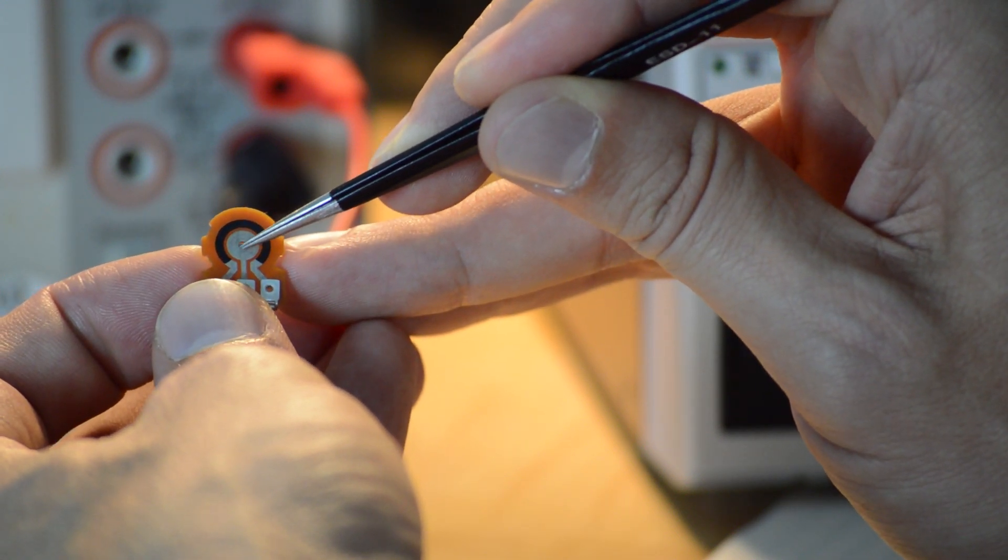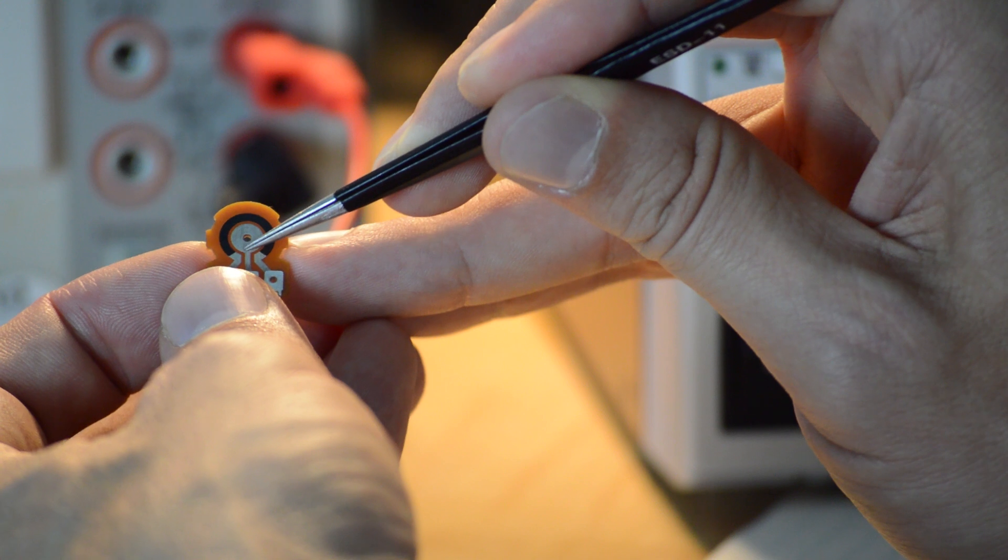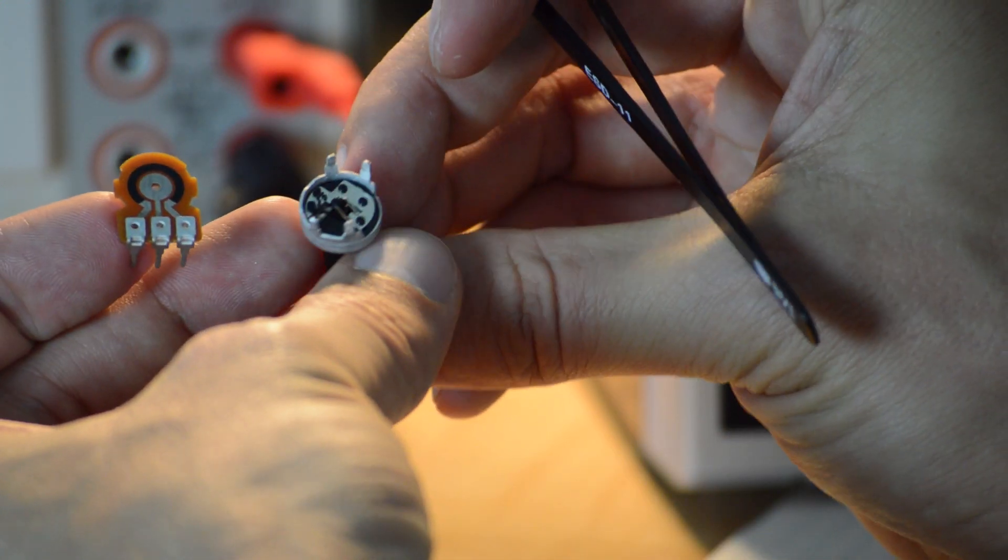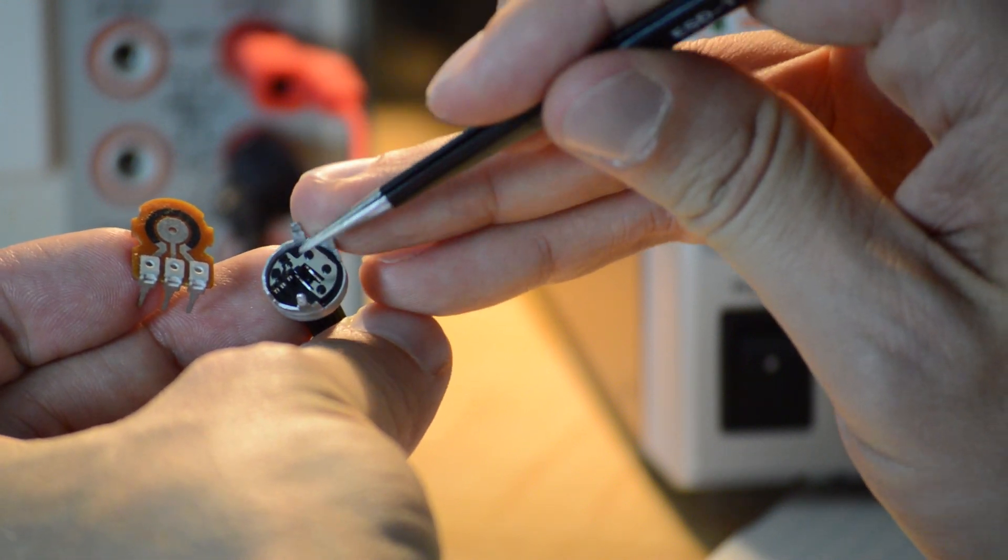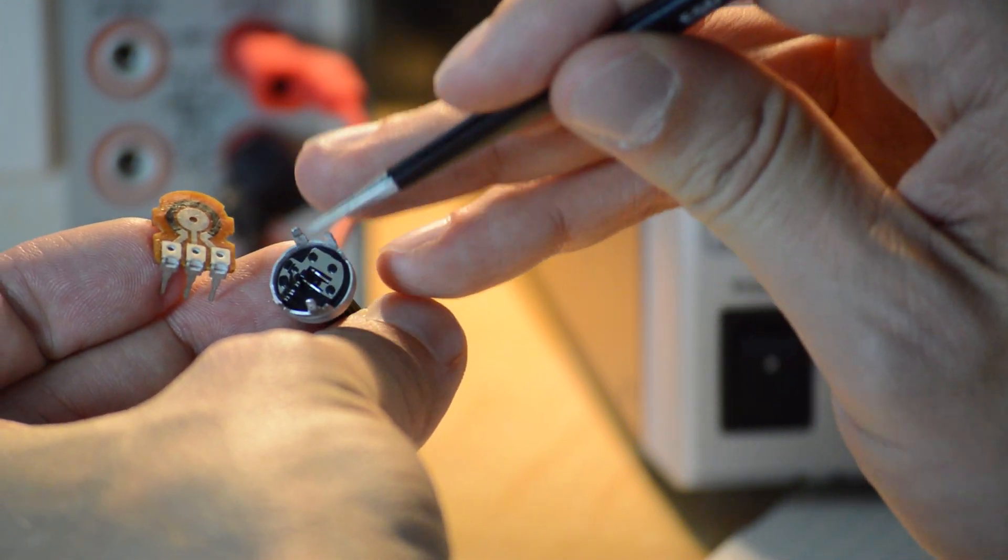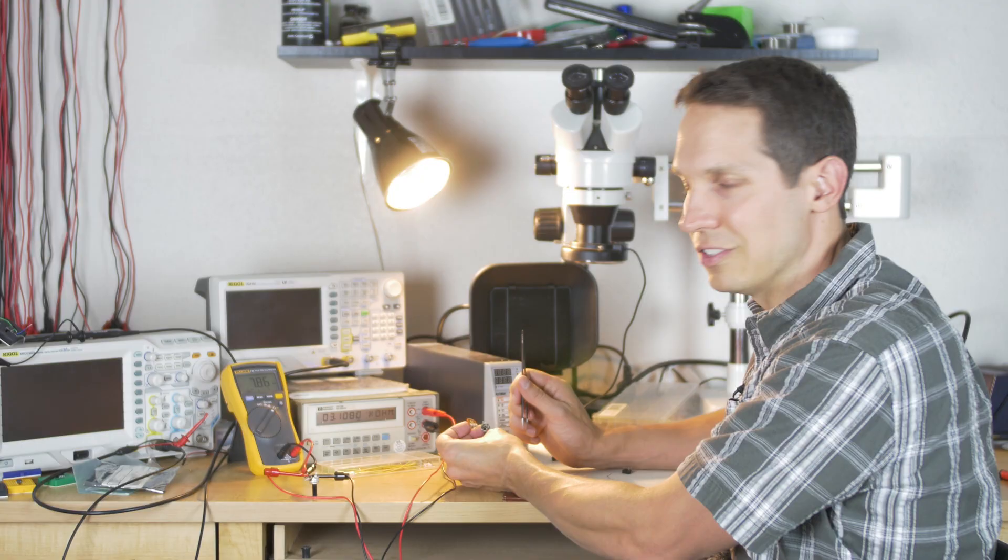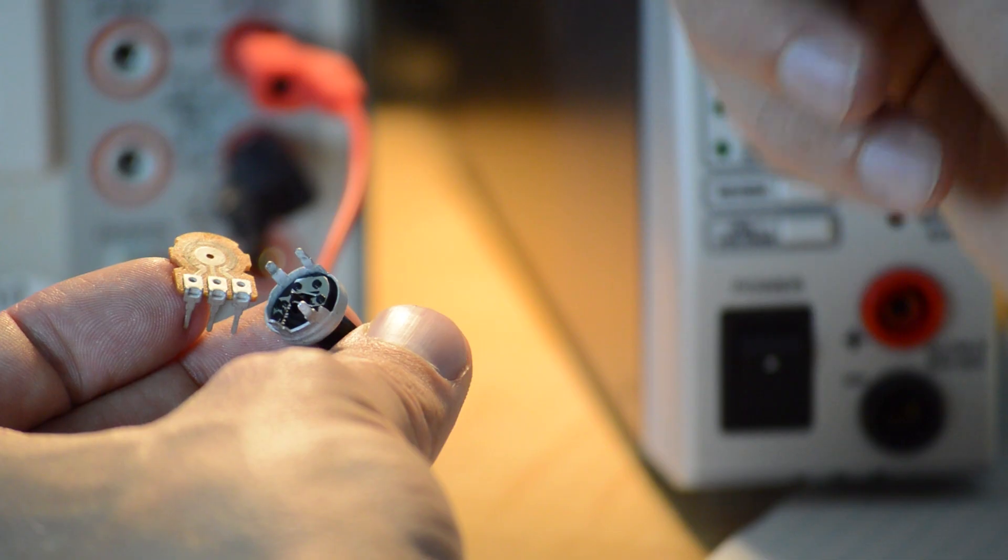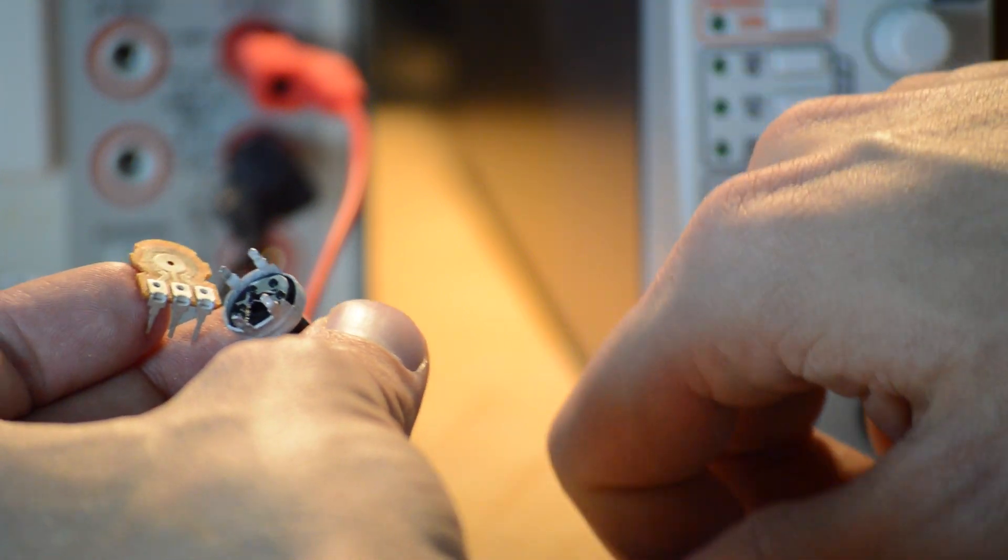As the wiper right here, as these points slide along here, it changes the internal resistance, and that is how a physical potentiometer or trimmer works, which is pretty interesting.